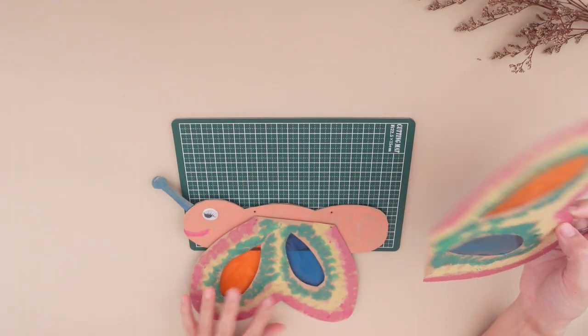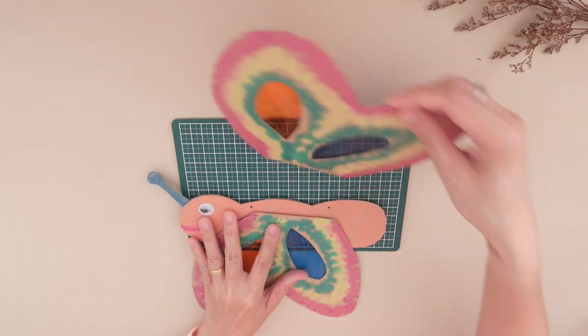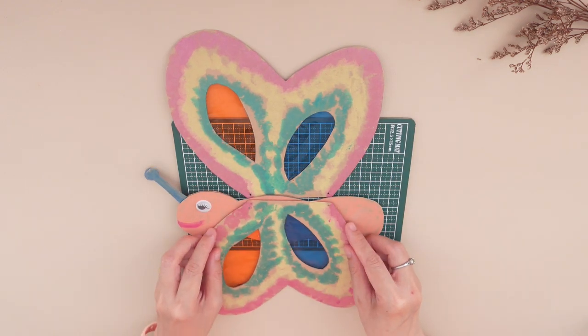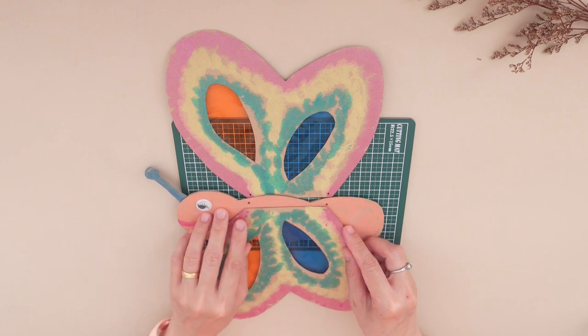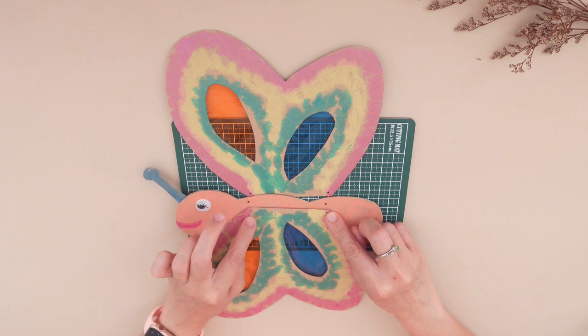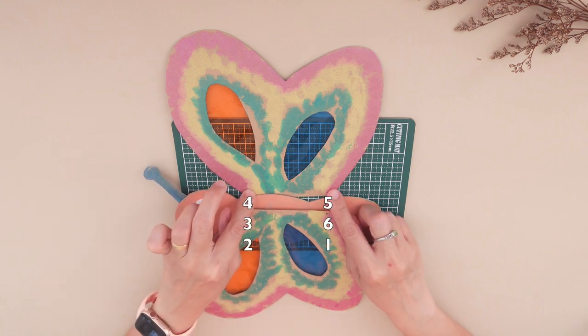Now arrange the parts like this with the body in the middle, one wing at the bottom, and one wing on top, with the holes all aligned to each other.